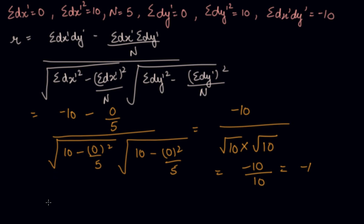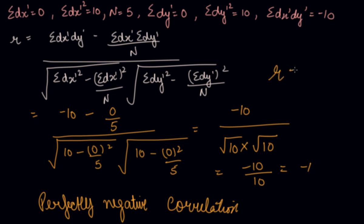Perfectly negative correlation. Negative correlation. See, r is the correlation and r is minus 1. There is a perfectly negative correlation. This was the step deviation method. I hope you like our video. Please download the Scholars Learning app and enjoy the learning experience with us.